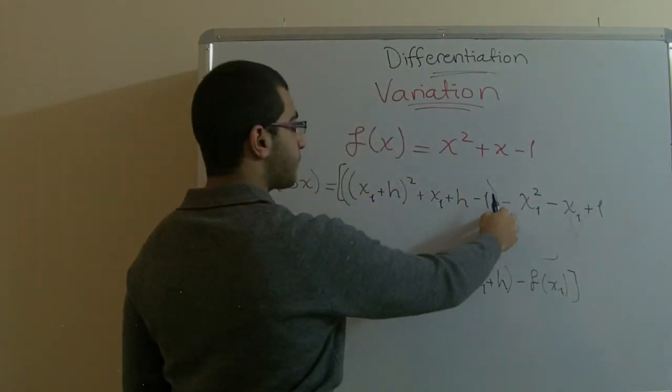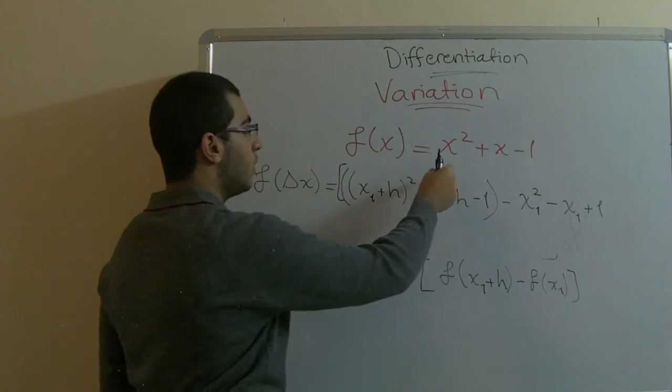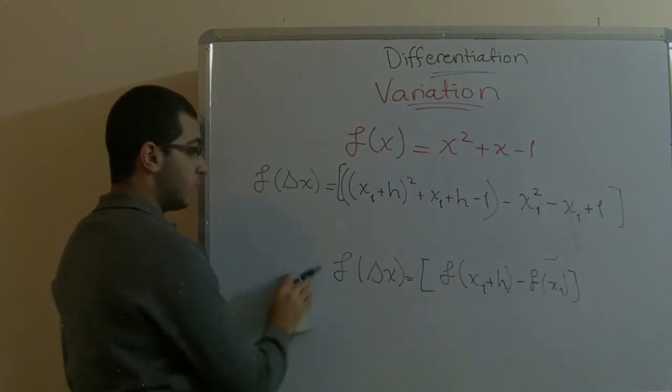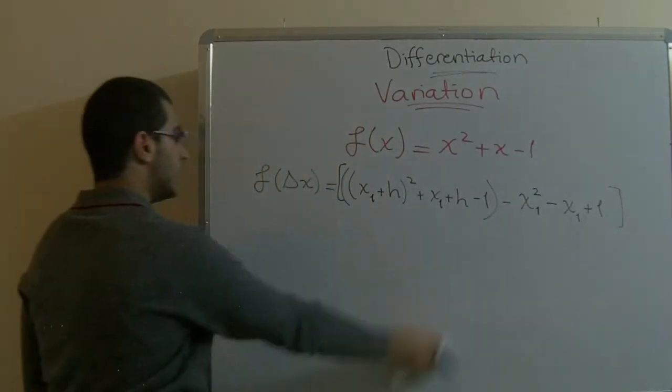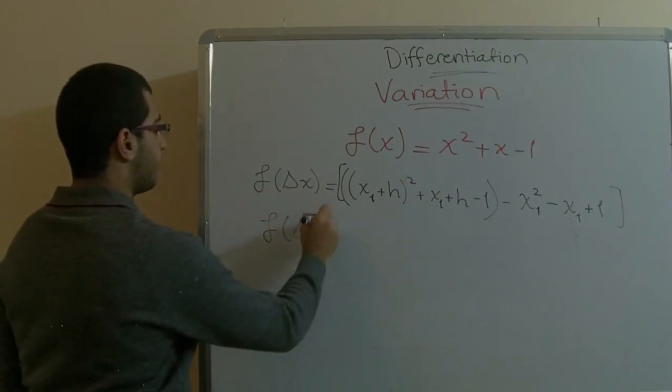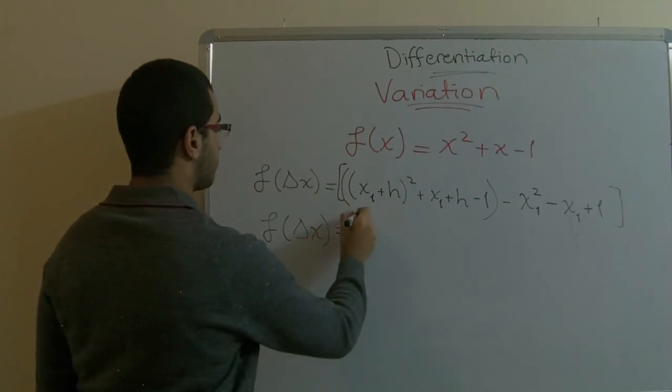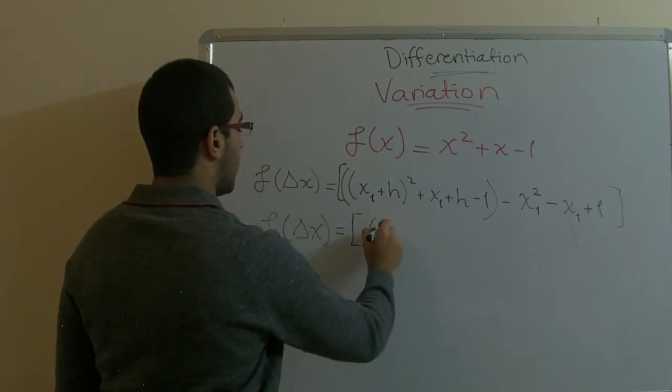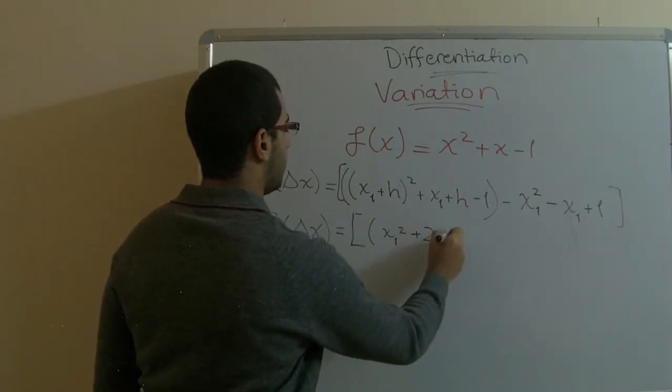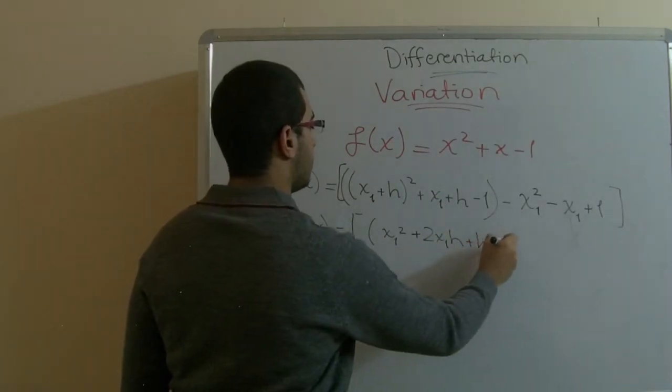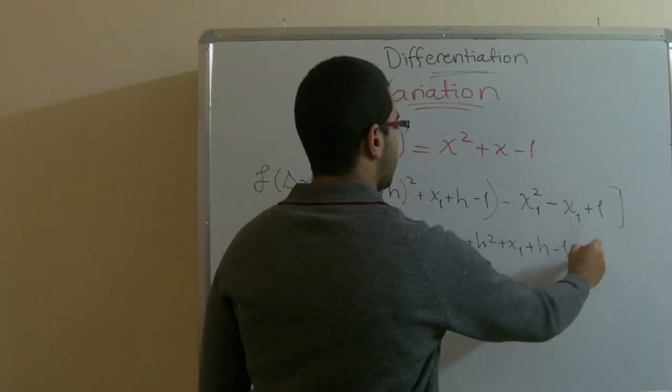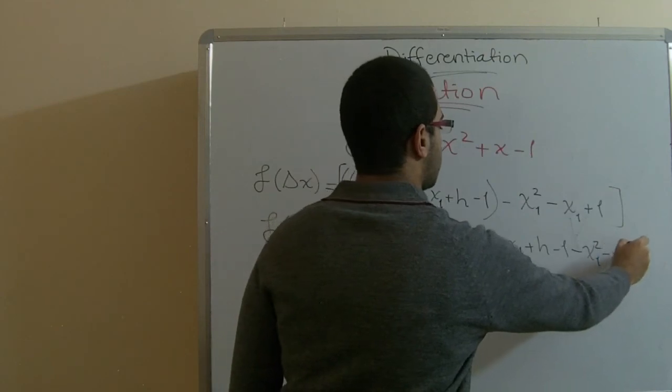The negative inside the bracket means our signs are all flipped. So we have f delta x equals x1 squared plus 2 x1 h plus h squared plus x1 plus h negative 1, negative x1 squared, negative x1, positive 1.